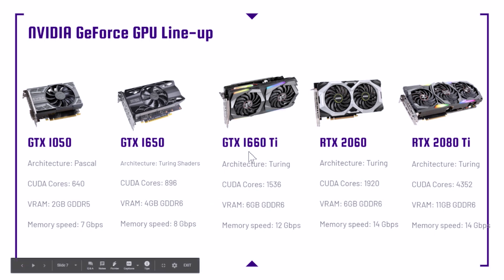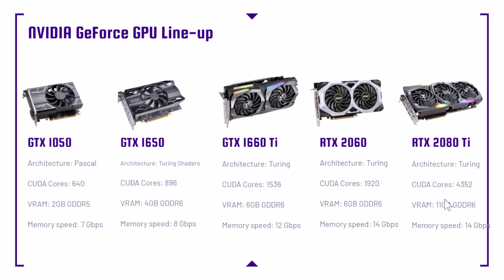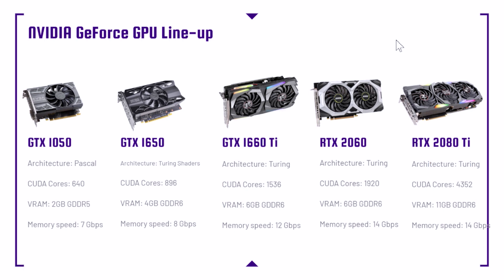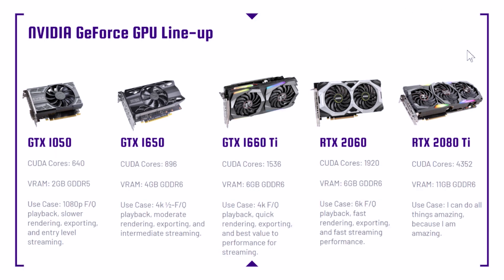The GTX 1660 has 1536 CUDA cores, 6 gigs of VRAM, and 12 gigs of memory speed. The RTX 2060 has 1920 CUDA cores, 6 gigs of VRAM, and 14 GPS memory speed. And finally, the big one — the RTX 2080 Ti with 4352 CUDA cores, 11 gigs of VRAM, and 14 gigabytes of memory speed. So what does all this mean and how much do you need?